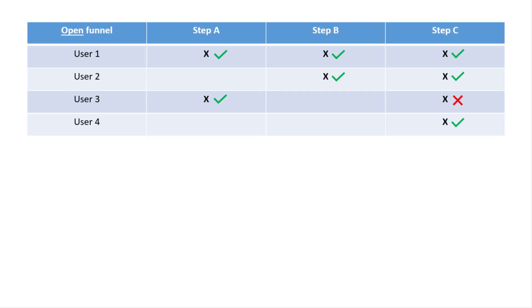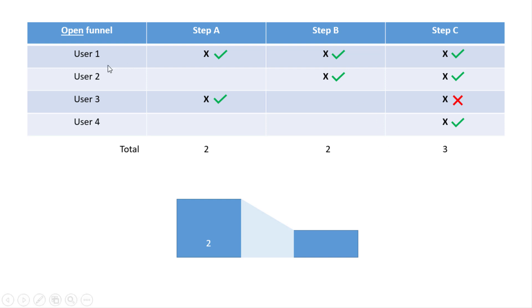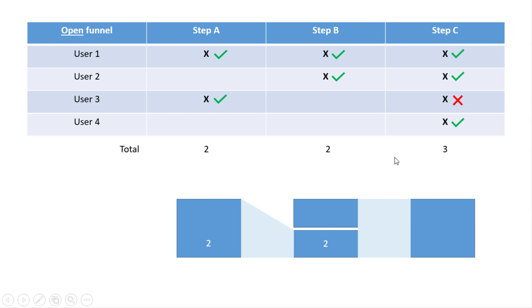Looking at the total numbers for the open funnel: two users in step one, two users in step two, and three users in step three. Visually, you will see two users in the first step, then a drop-off line because only user one moved from step one to step two. However, user two entered the funnel at step B, so they are displayed separately with a different line — this indicates users who entered this step from somewhere other than the previous step. Then both user one and user two moved to step C, plus user four entered at step three, giving us three users in the third step.